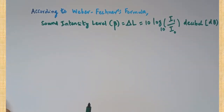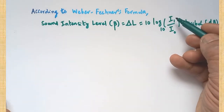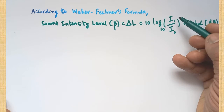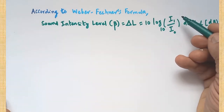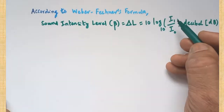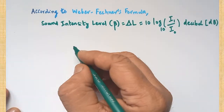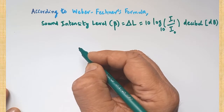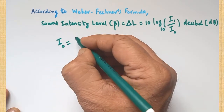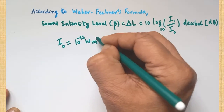For example, if the value of I1 is given — I1 being the sound intensity value — we are able to calculate beta. Here you should know what I0 is. I0 is called the threshold of hearing.